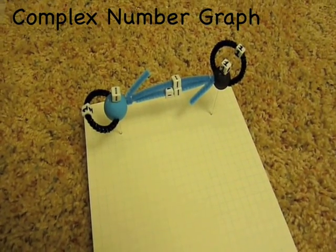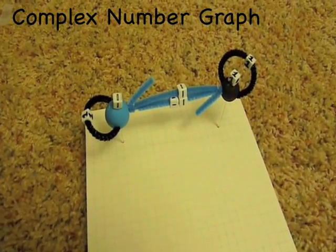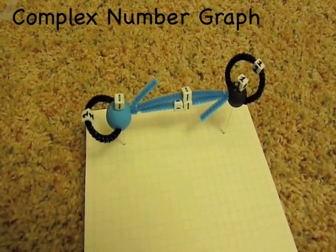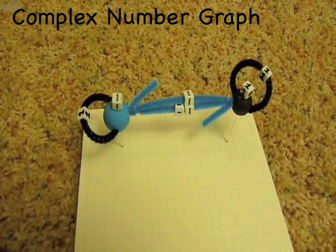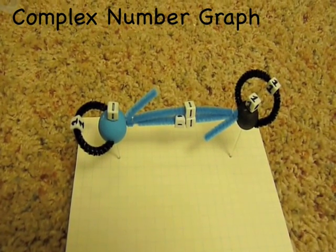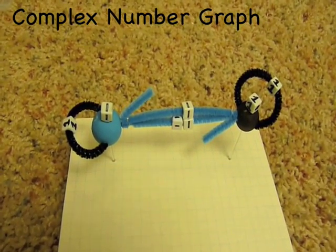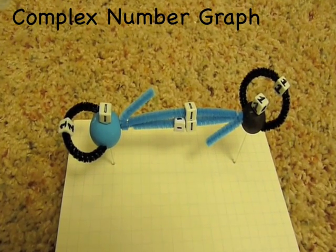The blue edges are directional. 1 times i goes out to i, but the return follows a different path. i times minus i gets back to 1.